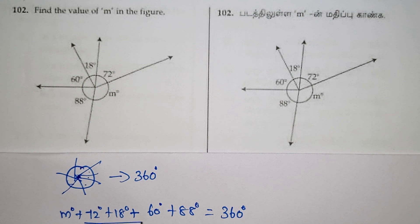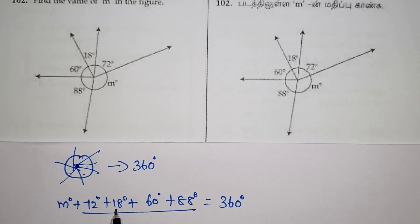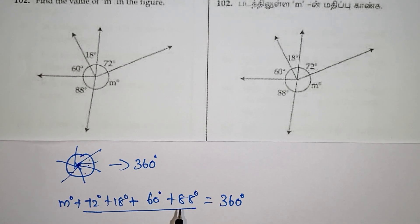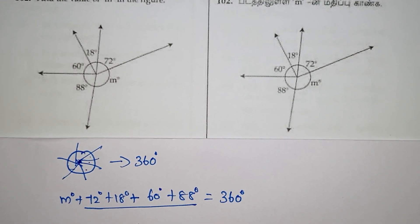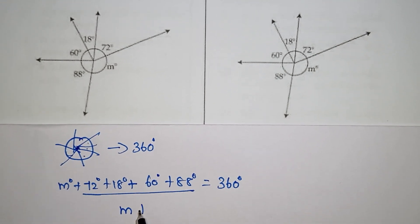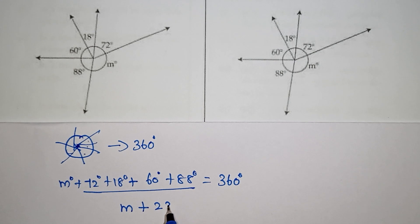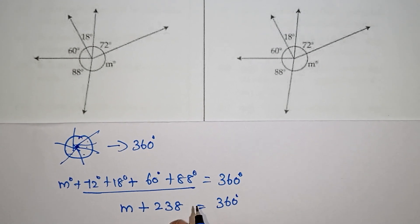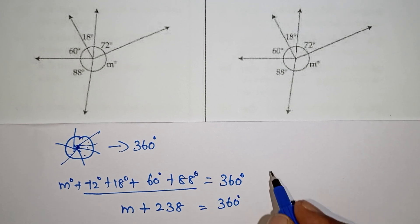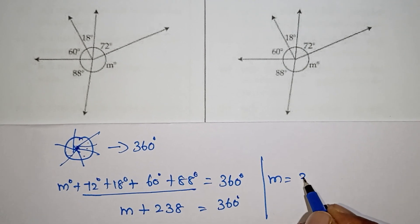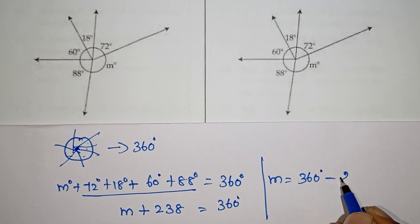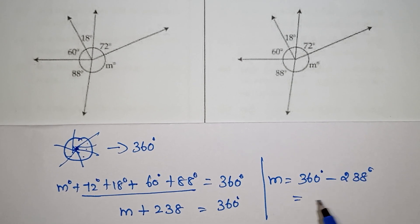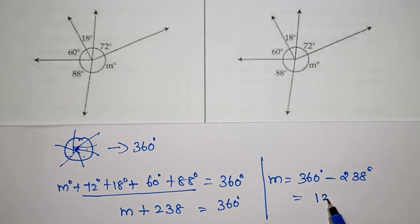M and the other angles: 72, 80, 90. So 90 plus 60 is 150, and 150 plus 88 gives us 238. So 238 plus M equals 360. M equals 360 minus 238.